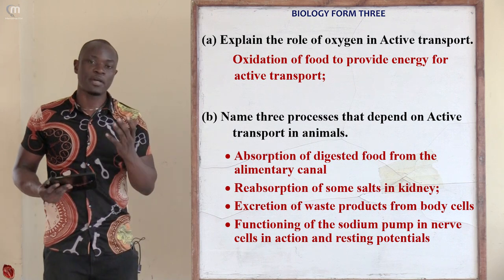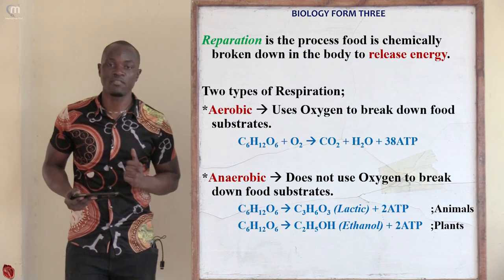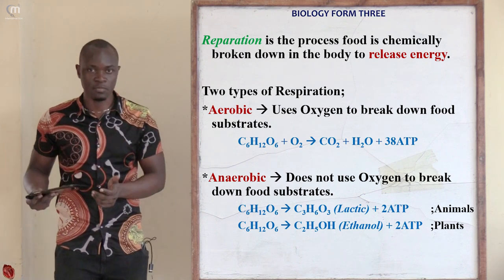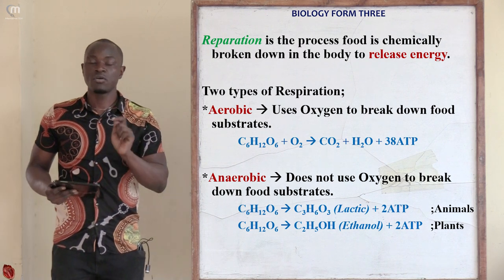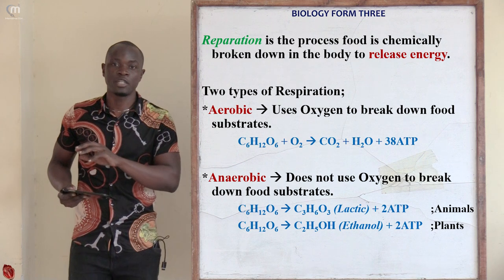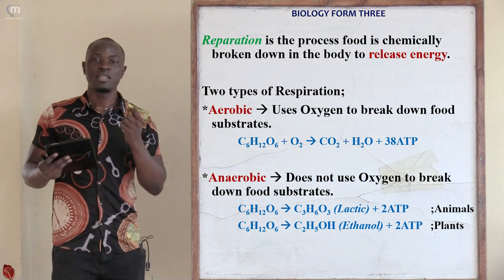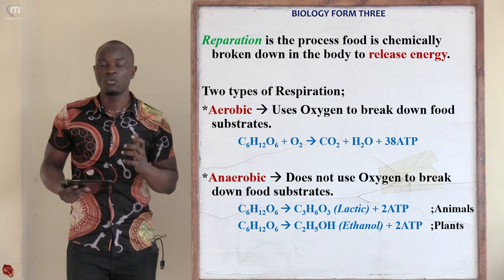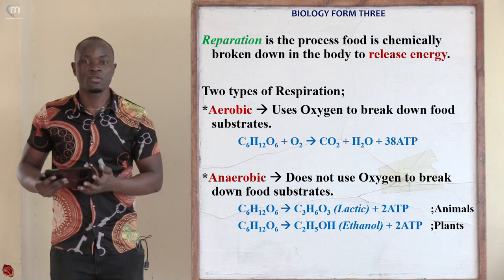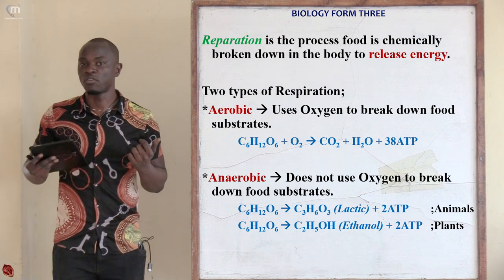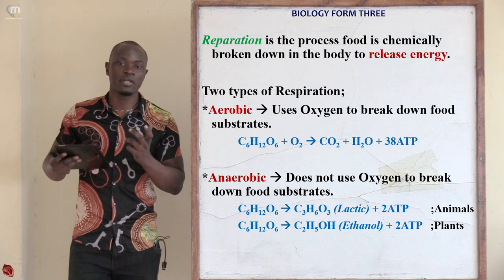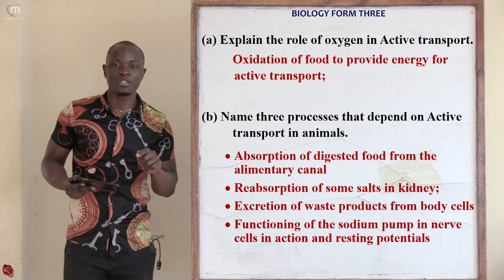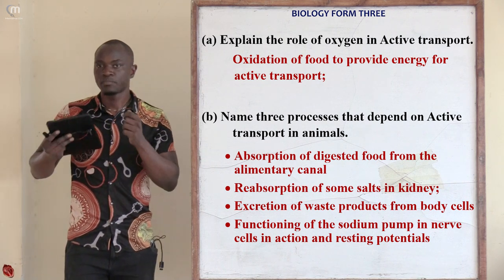This relates to respiration, which has two types: aerobic respiration, where oxygen must be present, and anaerobic respiration. In aerobic respiration, food is completely oxidized by oxygen to produce 36 to 38 ATP, a very high amount of energy. In anaerobic respiration, since oxygen is not used, only 2 ATP are produced. So the function of oxygen in active transport is oxidation of food to provide energy.